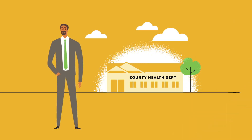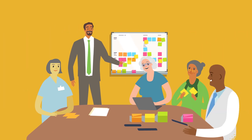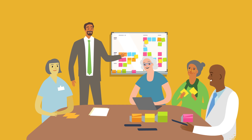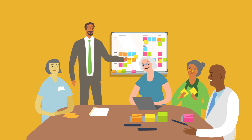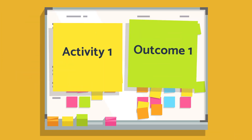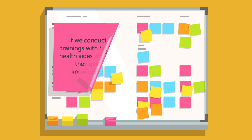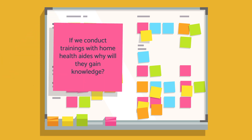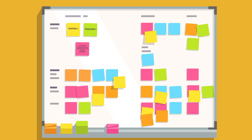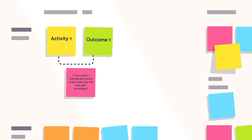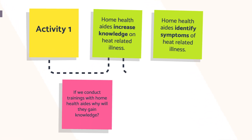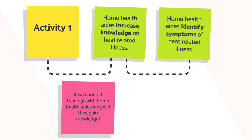Now let's check in with Jackson at the county health department to see how his training evaluation plan is progressing. After engaging a few additional stakeholders, Jackson and the work group conduct a logic modeling session to map out how they expect their home health aid intervention to unfold. They start by writing down all the activities and intended outcomes on sticky notes and placing them on the whiteboard to show how they think the program will work. Jackson then engages his group in a discussion about assumptions — for example, conducting trainings won't automatically lead to an increase in knowledge. The group works to identify underlying assumptions between two key outcomes: home health aids' increase in knowledge and the adoption of a new behavior, such as identifying symptoms of heat-related illness.